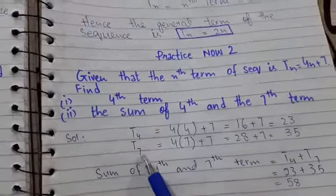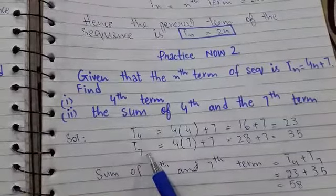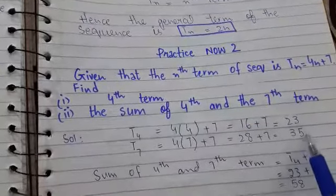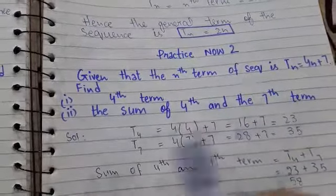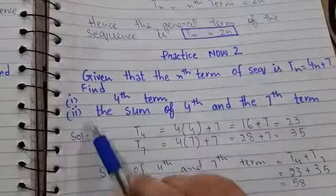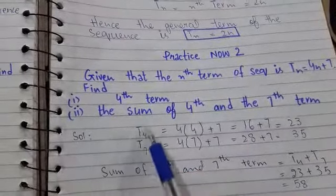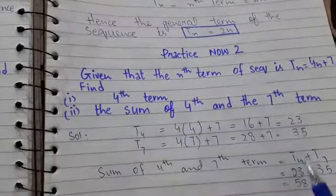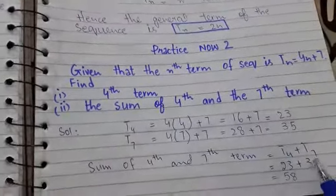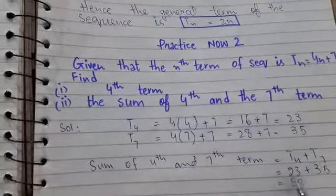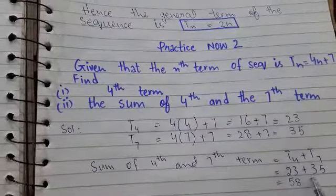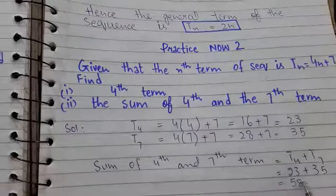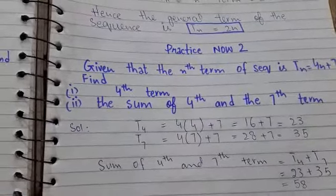In this way you find out the value of the 7th term: T7 = 35. In the second part we were required to find the sum of the 4th and 7th term. So T4 + T7 = 23 + 35 = 58.